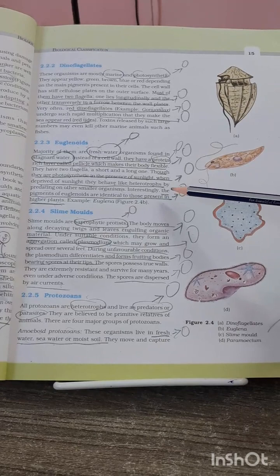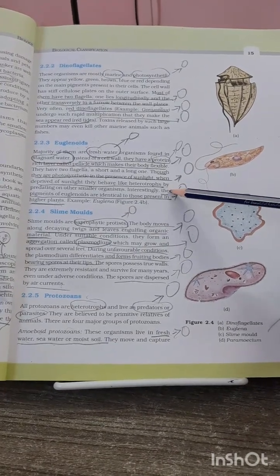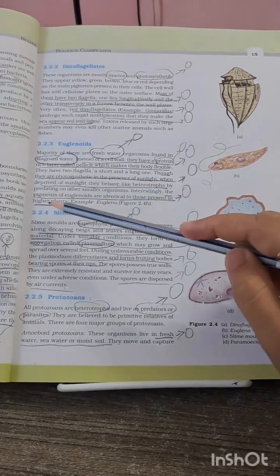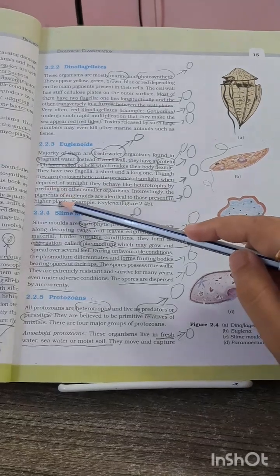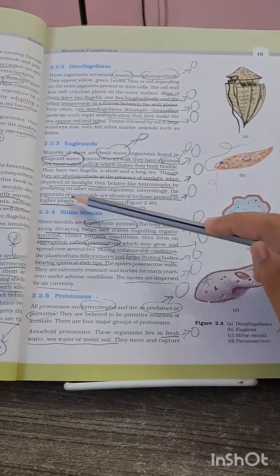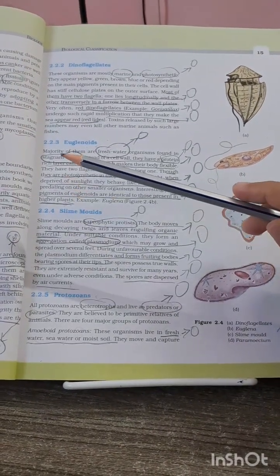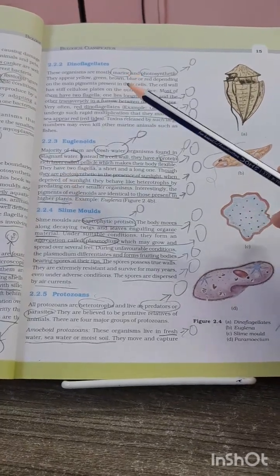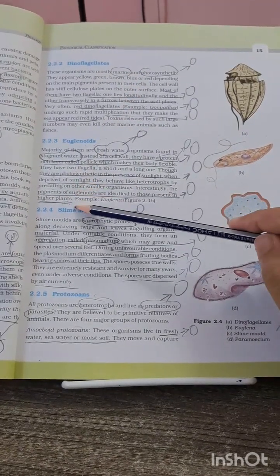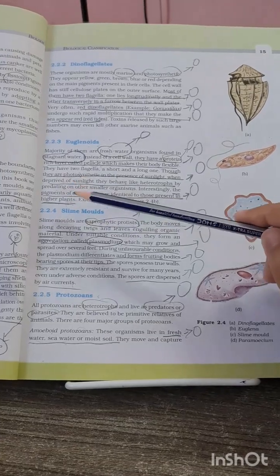Now another MCQ from euglenoids can be about the pigments, as they are same as those of the higher plants. This MCQ has been asked also in previous NEET examinations, that which in kingdom Protista organisms have pigments equivalent to higher plants? That is euglenoids.